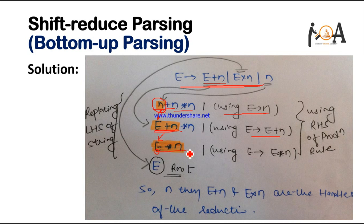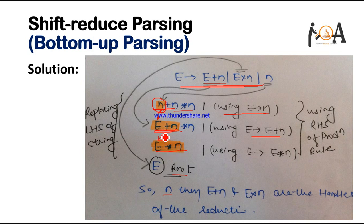Now what we are left with is E multiply with N. E multiply with N is also in the production rule, and we convert this E multiply with N to E. So finally we get our root element. What we did was rightmost derivation in reverse manner. The substrings — N, E plus N, and E multiply with N — occur at the rightmost side of the production rule, and by using the right-hand side of the production rule, we replace them, which is called LR parsing. The handles are the substrings used in converting to the non-terminal element.